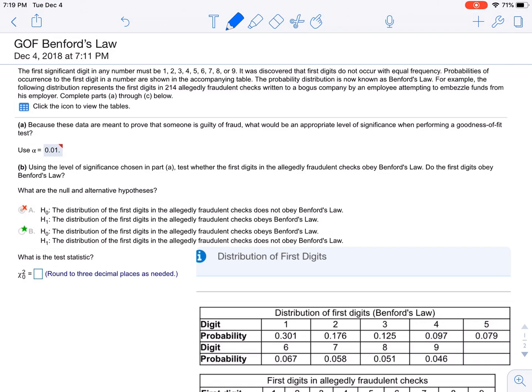...in 214 allegedly fraudulent checks written to a bogus company by an employee attempting to embezzle funds from his employer. Complete parts (a) through (c) below. So let's see, part (a) says: because these data are meant to prove that someone is guilty of fraud...